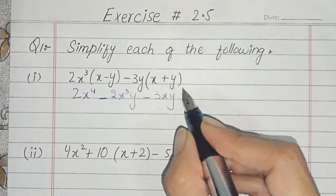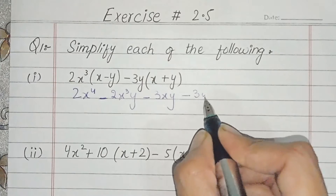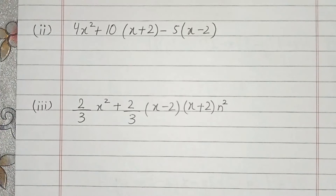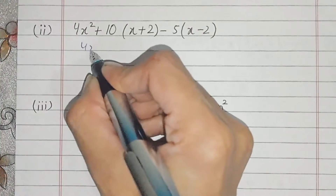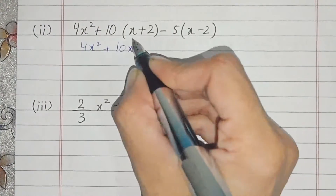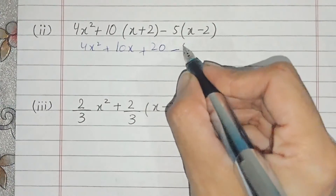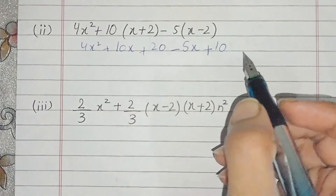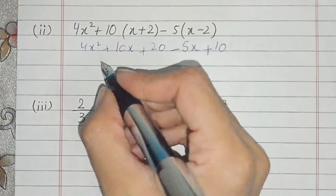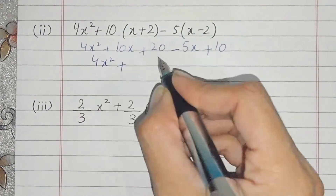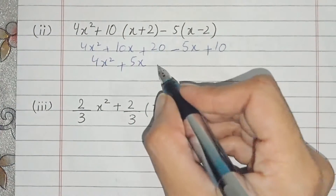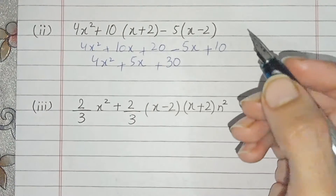We apply the sign rules: minus minus gives plus, minus minus gives plus. Here we get 3y². We multiply by 2x⁴y² and this is our answer — very simple. Part number two: we multiply by 4x⁴y². This is our answer. Then we multiply by 4x⁵ and 2x⁴y², and this is our answer. Now it's solved.